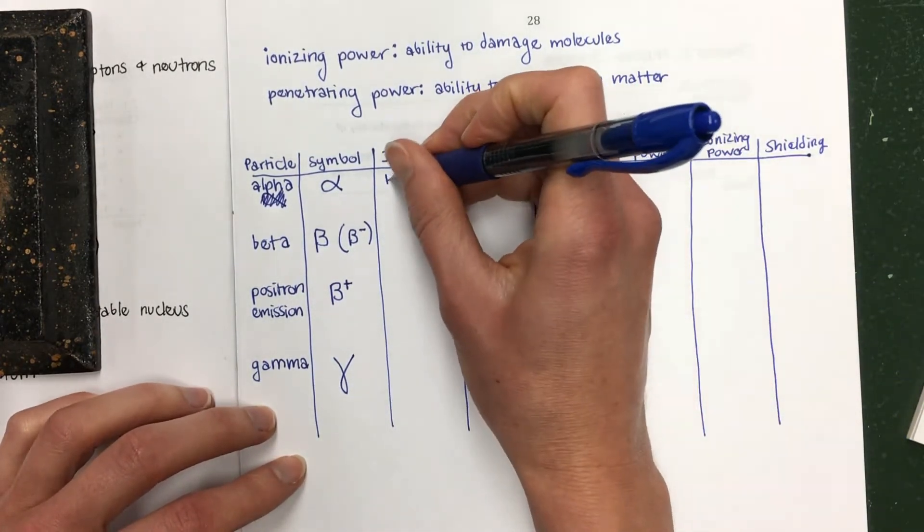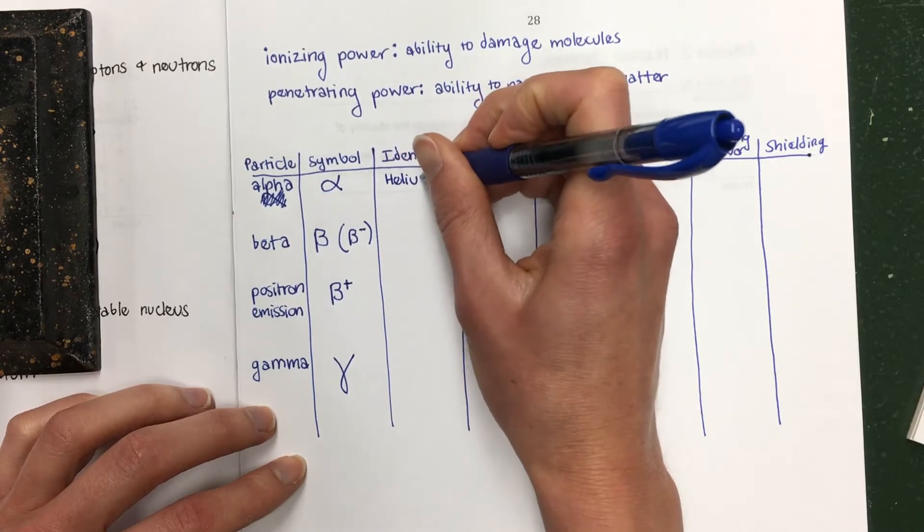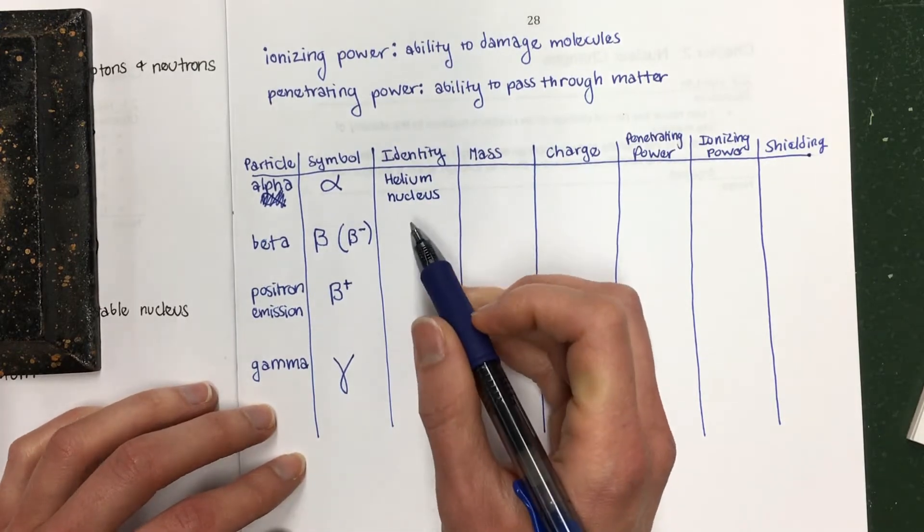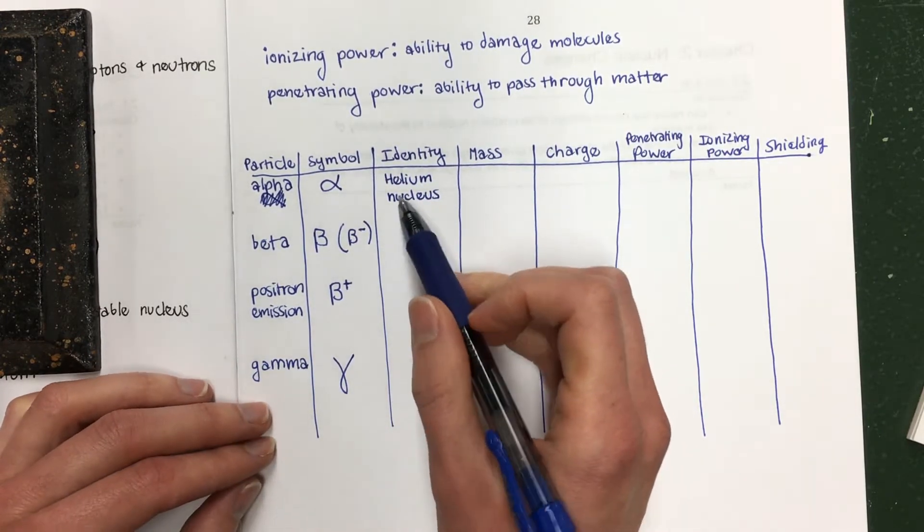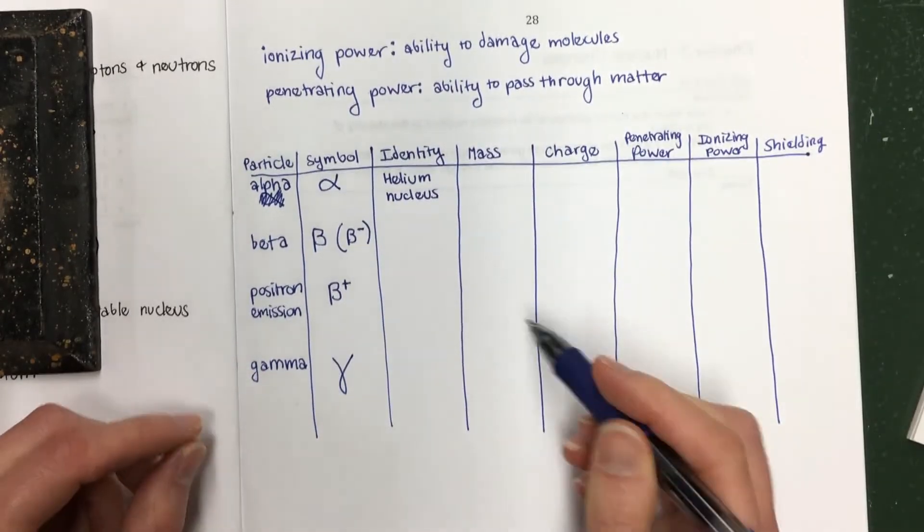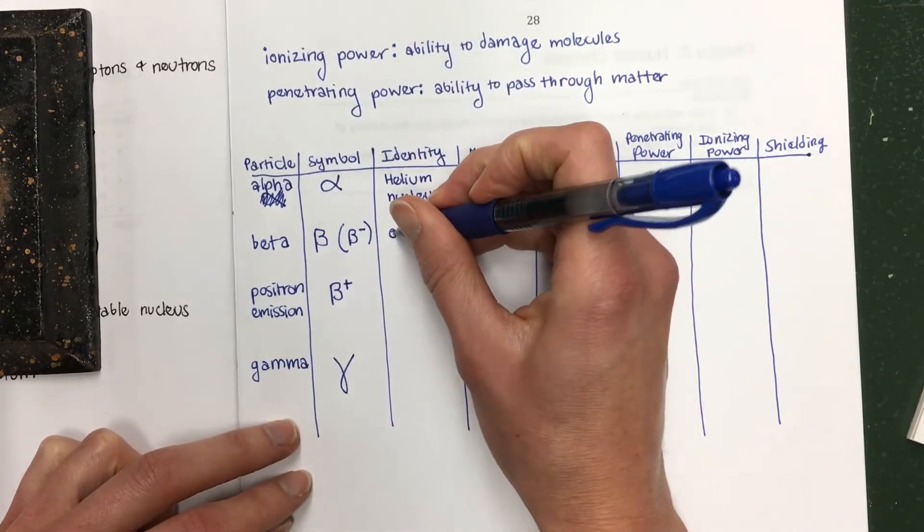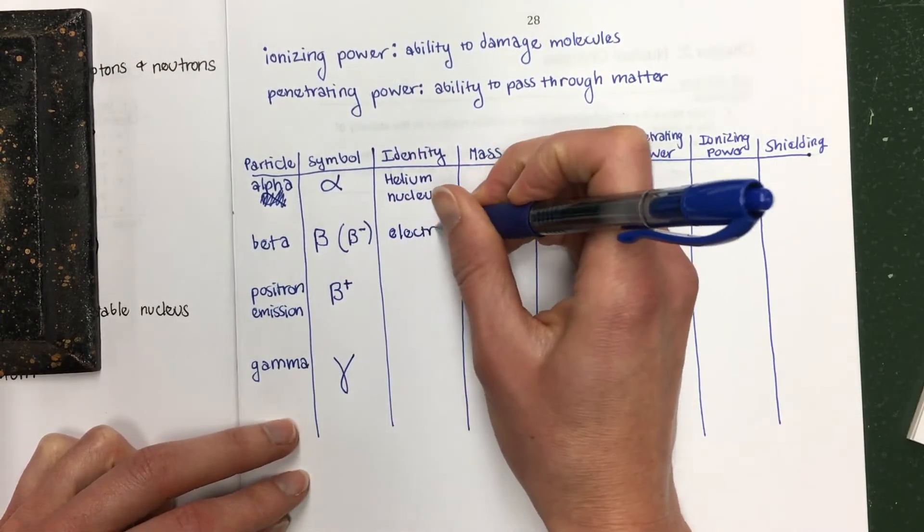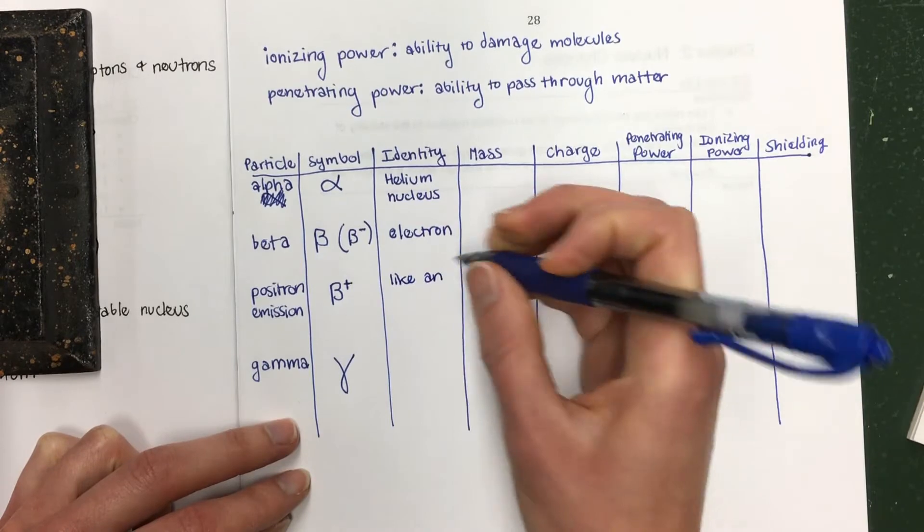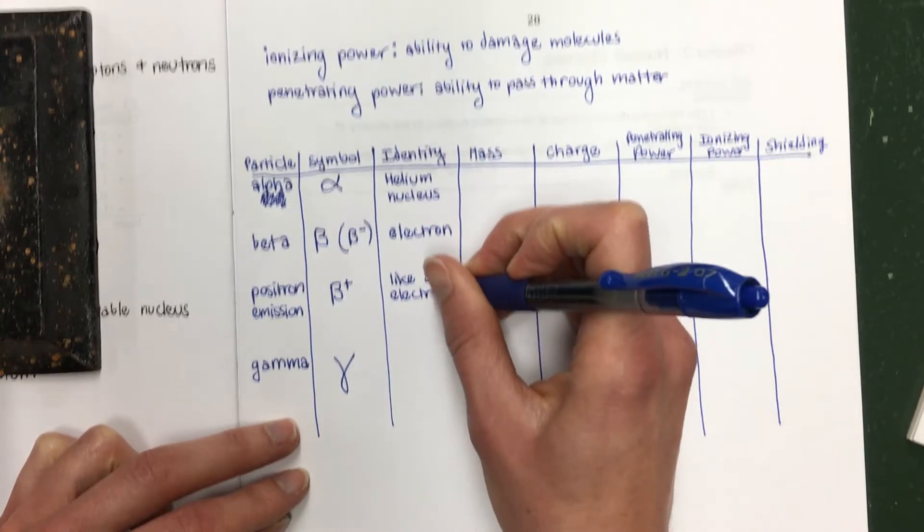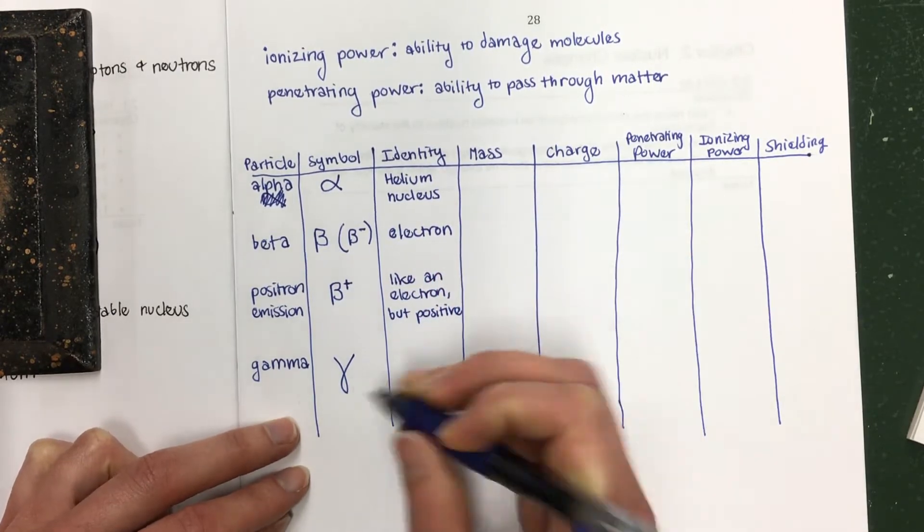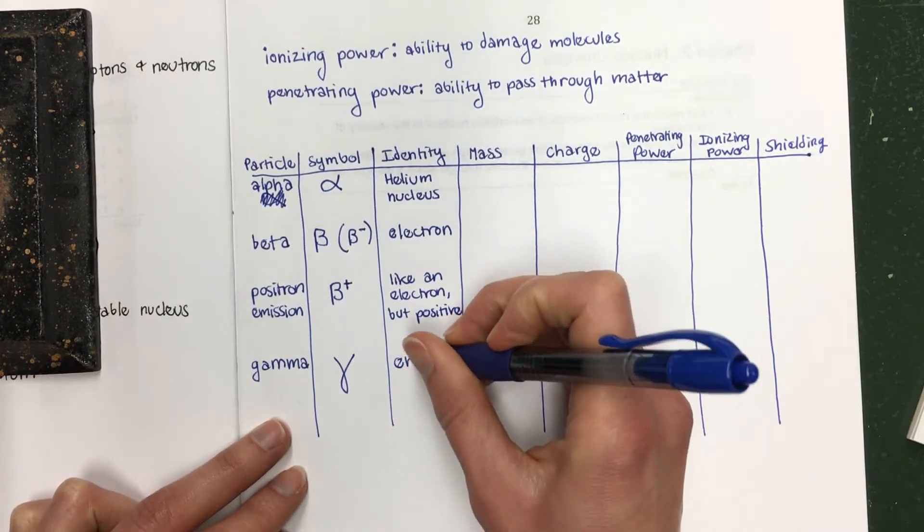An alpha particle is a helium nucleus. In Rutherford's gold foil experiment, he was shooting alpha particles at the gold foil. An alpha particle is a helium nucleus, which is just two protons and two neutrons together. A beta particle is really similar to an electron. A positron is kind of like an electron, but positive instead of negative, hence it's called a positron. And a gamma ray is just energy.